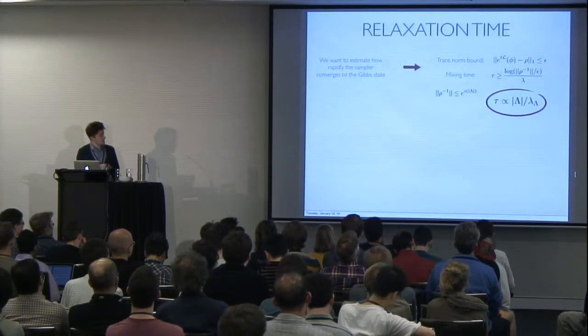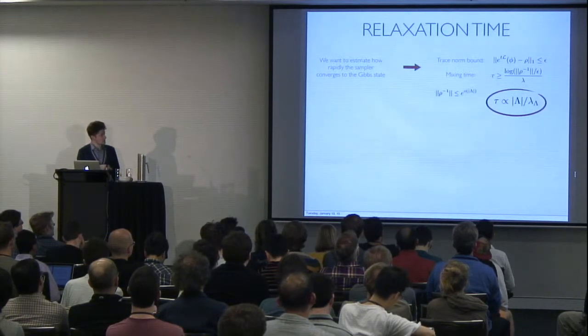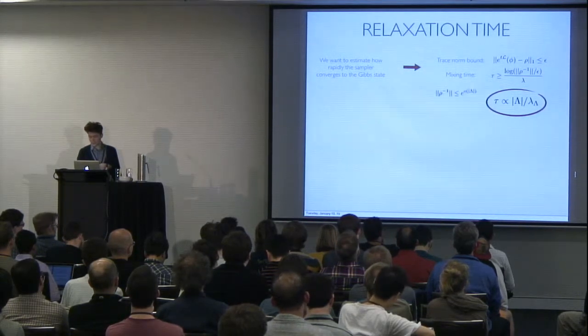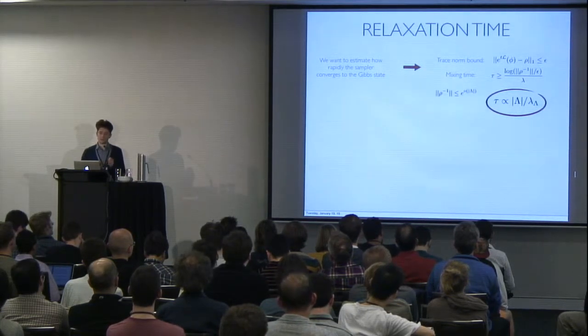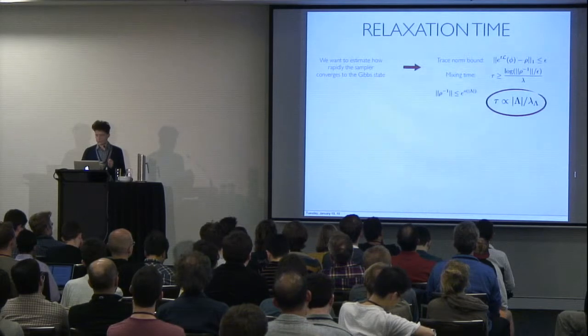which means that you're guaranteed to be epsilon close to the stationary state in a time which scales as the volume of the system divided by the spectral gap of the generator, of the semigroup, so the Liouvillian L.